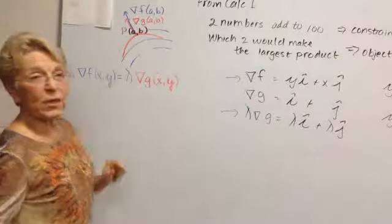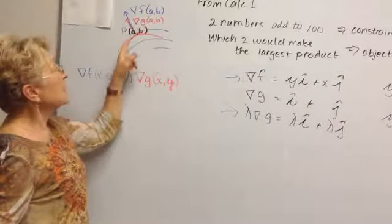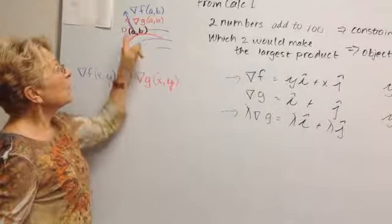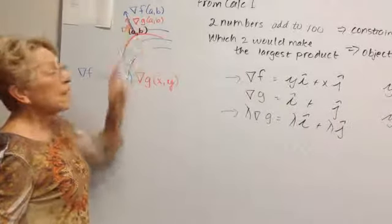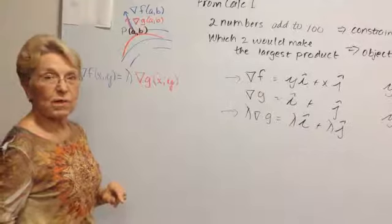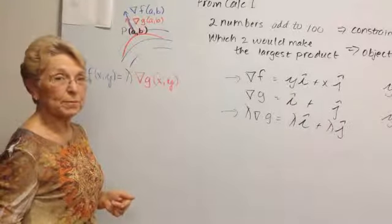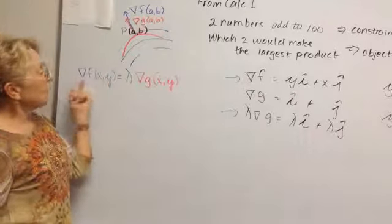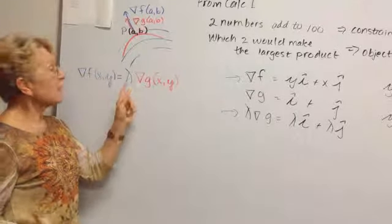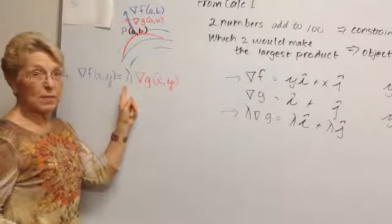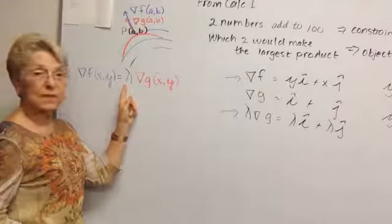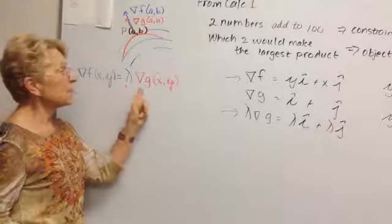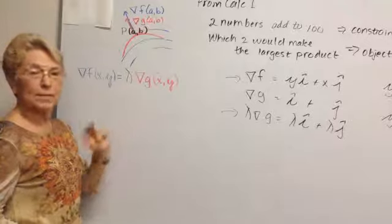Here at point P we're going to see that the gradients for the function f and the function g are parallel. And we're going to make a statement that these gradients are indeed equal if and possibly necessarily that we have a factor lambda that makes them equal.